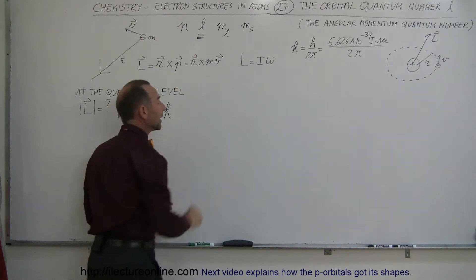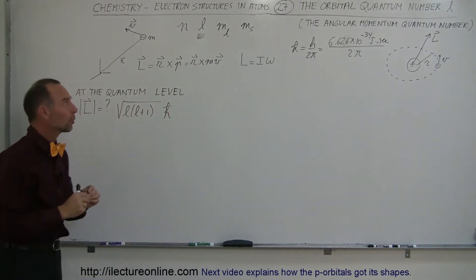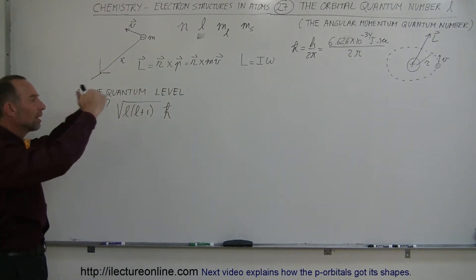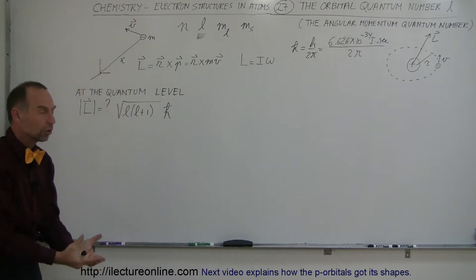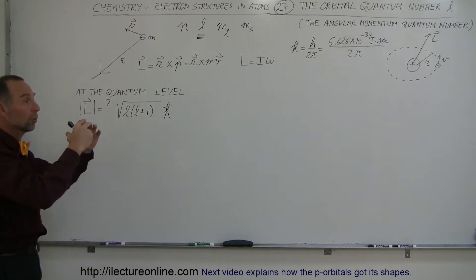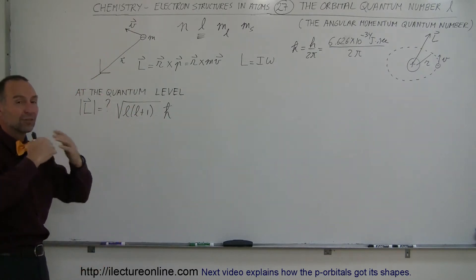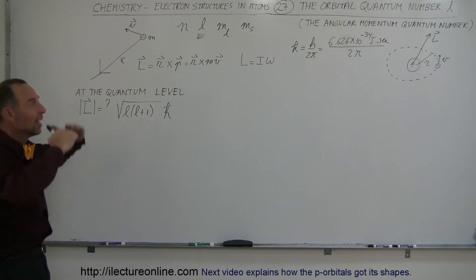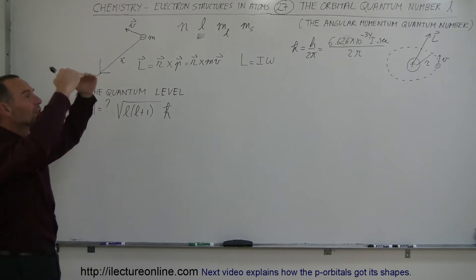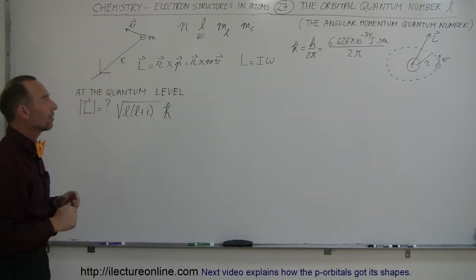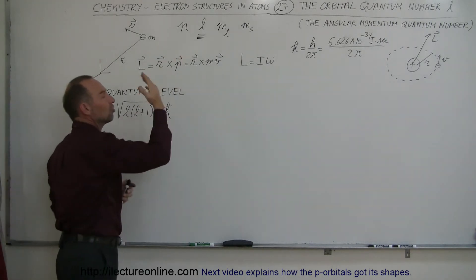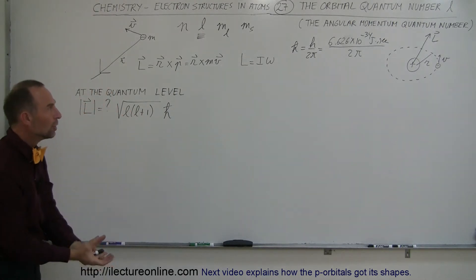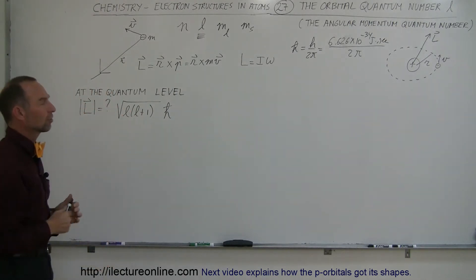We talked about N before — that's called the principal quantum number. It defines the energy levels, the regions around the nucleus where electrons can reside based on how much energy they have. The more energy they have, the higher energy level they will be at. N describes those energy levels, called the shells.